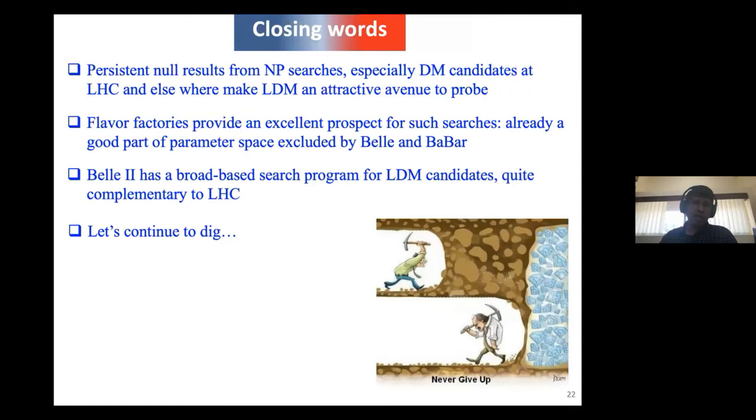As a closing word, one would say that we would have loved to see new physics results from LHC, but so far no such result has come except for a few anomalies, a few excesses here and there. But this light dark matter is an attractive avenue to probe. Here, flavor factories provide an excellent prospect thanks to the clean environment as well as the low energy environment. Already a good part of the parameter space, as I showed in a couple of samples of results, is excluded by Belle and BaBar. Belle 2 has a much broader search program, especially thanks to this single photon trigger. As an experimentalist, we'd like to continue to dig. Thanks a lot, and sorry for being late.